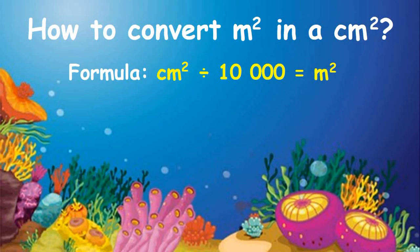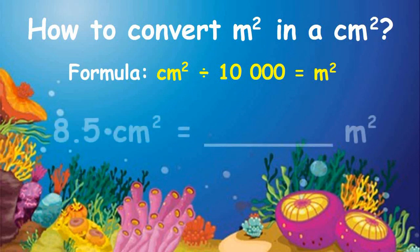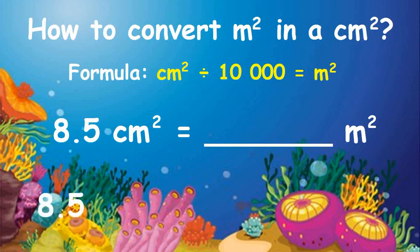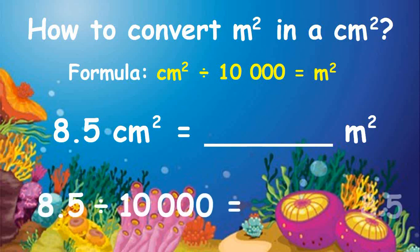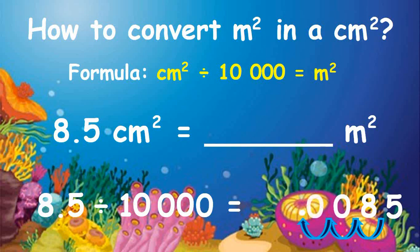What if the given square centimeter is a decimal? Let's have an example of 8.5 square centimeters converted to square meters. To convert, divide 8.5 by 1, which equals 8.5, then move the decimal point four places to the left, as there are four zeros in 10,000, putting zeros in each decimal place. Therefore, 8.5 square centimeters is equal to 0.00085 square meters.